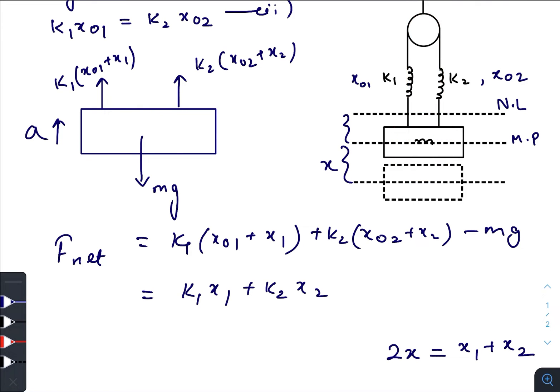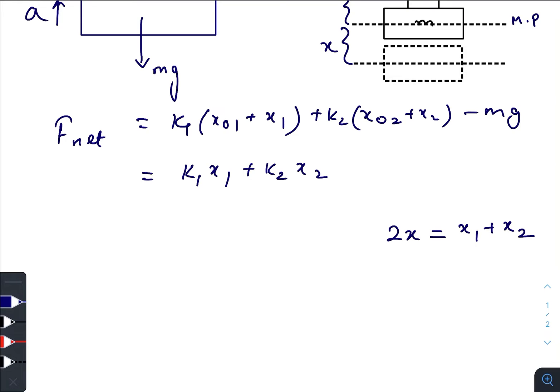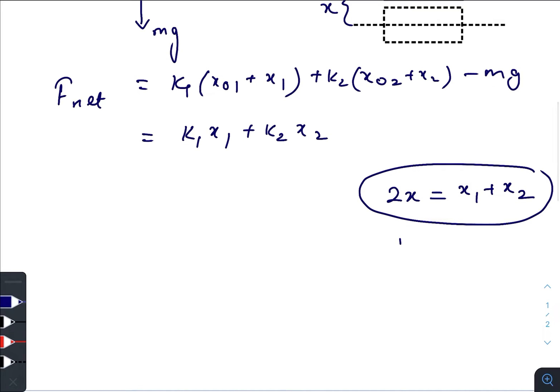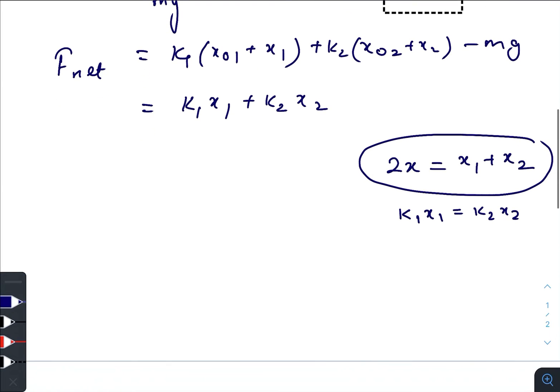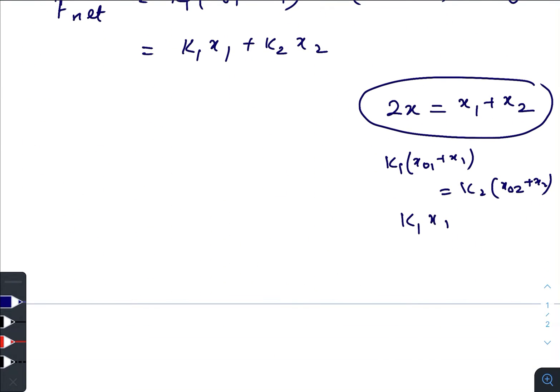Again I am repeating: these two points of the whole string stretch by an amount x and x, so the total stretching of this string is 2x, and that 2x stretching is provided by the individual stretching of these two springs separately. This is another equation that we will be using. Another one we have already discussed: k₁x₁ must be equal to k₂x₂.